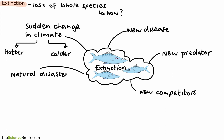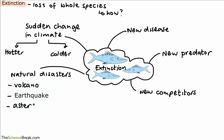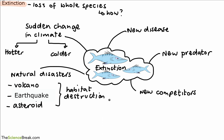There's also the idea of natural disasters. Natural disasters include things like volcanoes, earthquakes, and even asteroids from space. All of these natural disasters could cause habitat destruction, which means the animals have no more habitat to live in and they could become extinct.